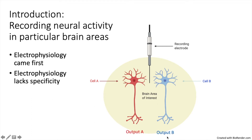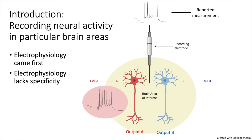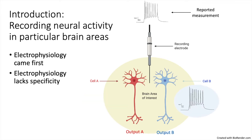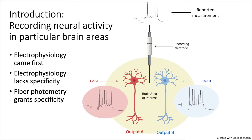Since both cells are in proximity to each other, the electrode cannot distinguish between when cell A is active, when cell B is active, or when both cells are active. To overcome this problem, neuroscience has developed the fiber photometry technique, which allows you to measure from specific cell populations in the specific brain areas of interest.